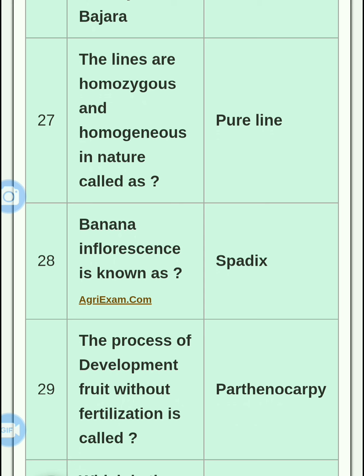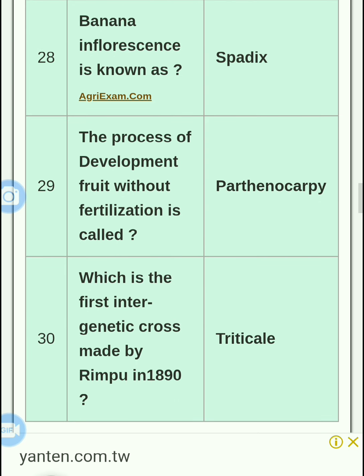Banana inflorescence is known as spadix — the inflorescence of the banana plant is called a spadix. The process of development of fruit without fertilization is called parthenocarpy. The process of development of an embryo without fertilization is called apomixis.